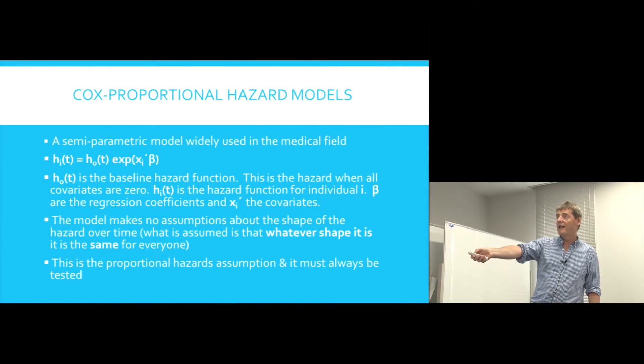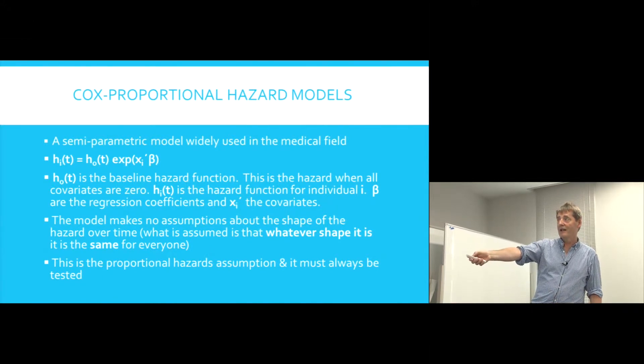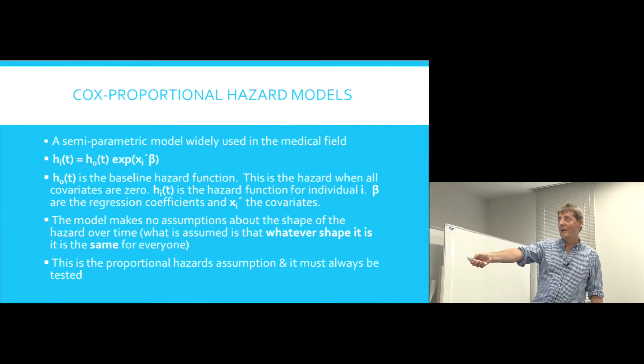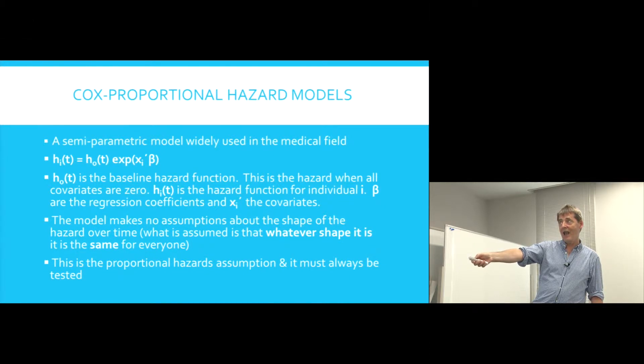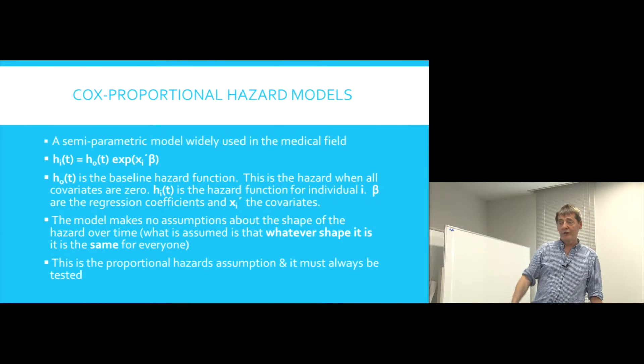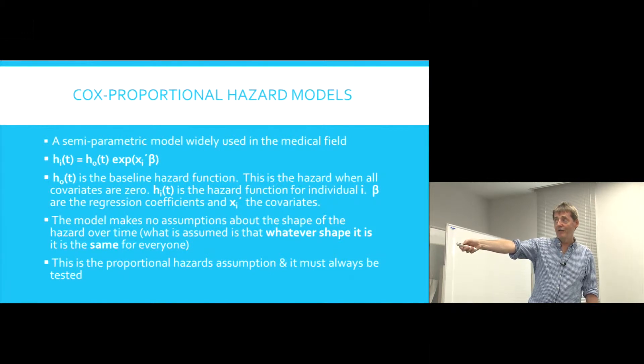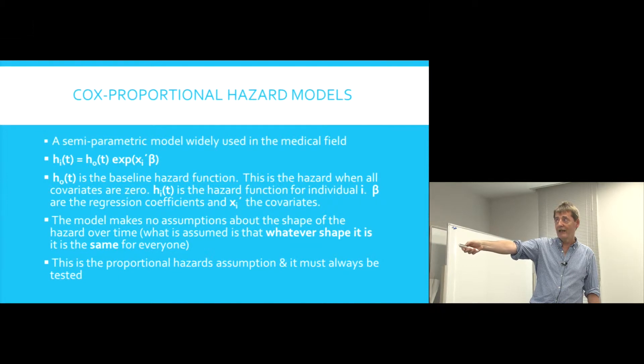And then the second part is where we have particular covariates. It might be patient age, gender, etc. And this allows a specific hazard to be calculated for different groups. So different groups have a particular hazard in common, H0 of T, and then a different hazard depending on things like their age or gender.